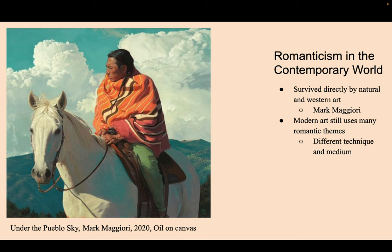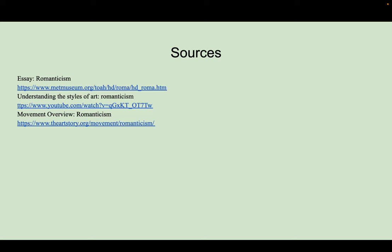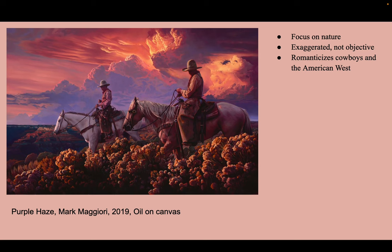Modern and postmodern art still kind of uses Romantic theming. You know that guy with the stupid toilet sculpture? That is individualistic — it's meant to make the viewer feel something. You're supposed to be angry at it. You're supposed to recognize that the artist is doing his own thing, and the point of that piece is to say 'hey, nobody's gonna stop me.'